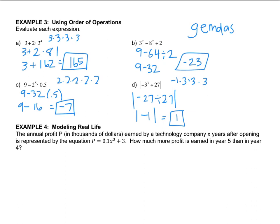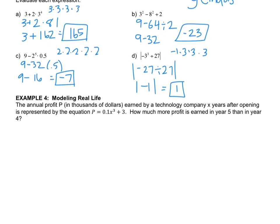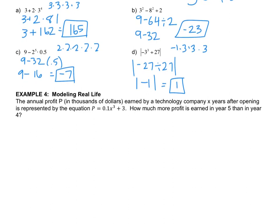Last one, example 4. Now we've got a word problem. The annual profit P earned by a technology company X years after opening is represented by this equation. How much more profit was earned in year 5 than in year 4? So I'm going to tell you what to do, and you're going to pause the video, and you're going to do it. So what you're going to do is you're going to find the value at 4 years.